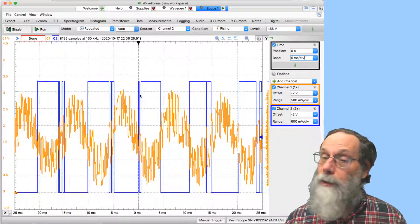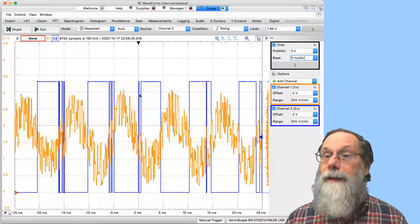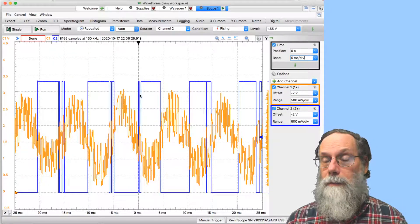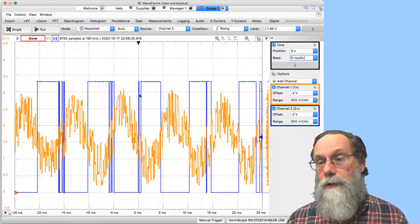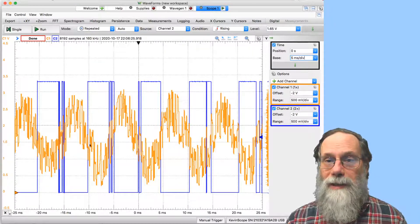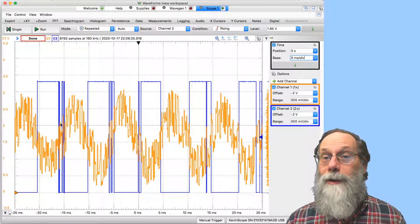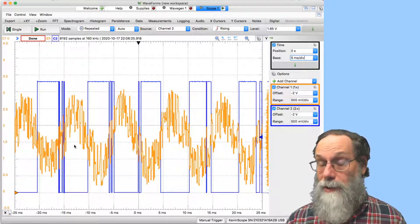Here the Schmidt trigger is clearly failing to clean up the noise. And that's because the noise is bigger than our hysteresis voltage. The signal swings far enough that it goes from the lower threshold to the upper threshold and back just as a result of the noise.